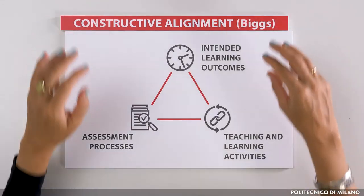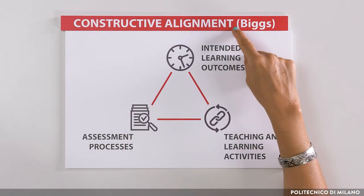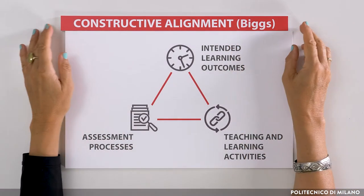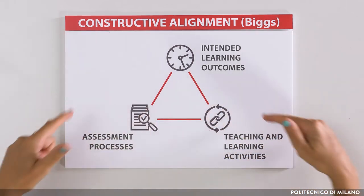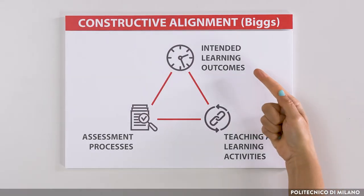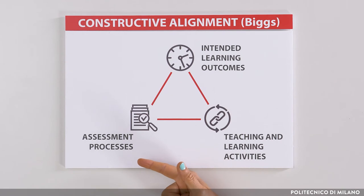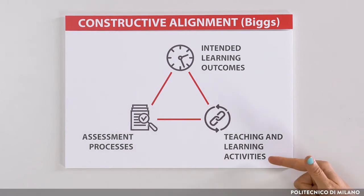What does he mean by alignment? As is already clear from this diagram, the prerequisite of effective teaching is being able to design a consistent alignment among these three elements: intended learning outcomes, assessment process, and activities.